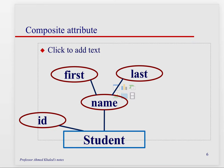In this example, you can see both a simple attribute and a composite one. The simple one is ID — it can't be broken down any further — and the composite one is name. Address is another good example that can be broken up into multiple pieces. This is how you would depict it in your ER diagram when something can be broken down into multiple components.